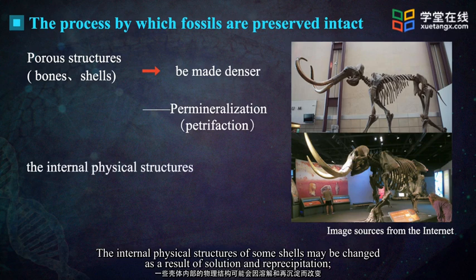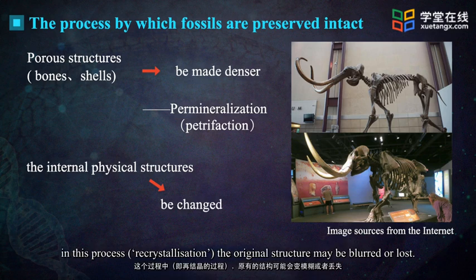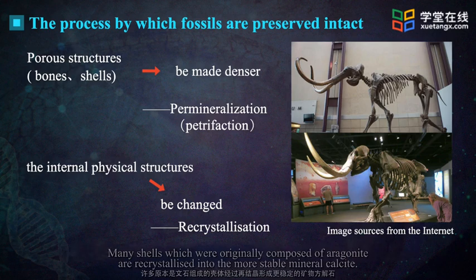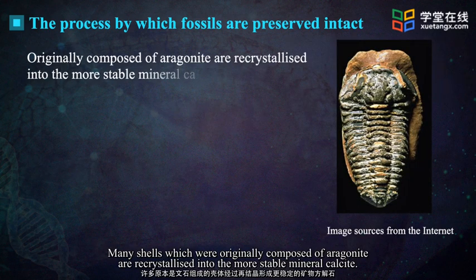The internal physical structures of some shells may be changed as a result of solution and re-precipitation. In this process — recrystallization — the original structure may be blurred or lost. Many shells, which were originally composed of aragonite, are recrystallized into the more stable mineral, calcite.